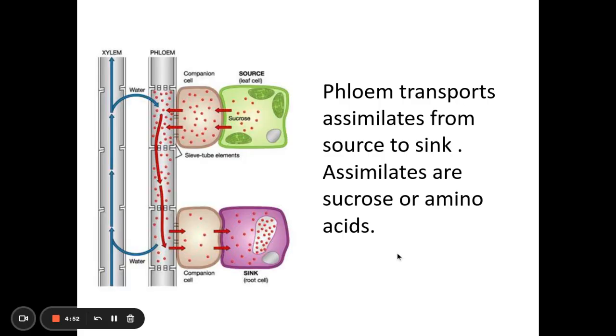Now the phloem is a vascular bundle, part of the vascular bundle inside a plant. We have the phloem and the xylem. The phloem transports assimilates from source to sink. Assimilates are sucrose and amino acids.